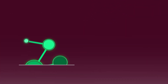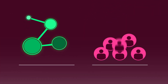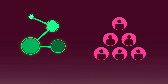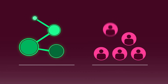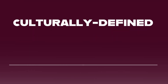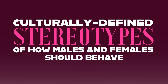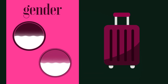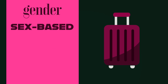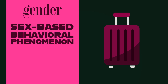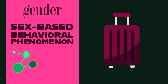These components can be influenced by both biological and sociological variables, but many aspects of gender are also based in culturally defined stereotypes of how males and females should behave. Thus, using a broad definition, we can define gender as a sex-based behavioral phenomenon, which is affected by our biology and our environment.